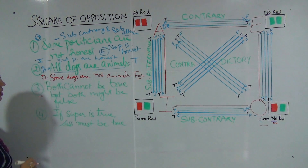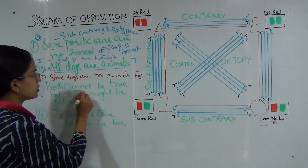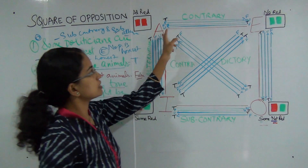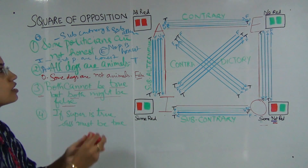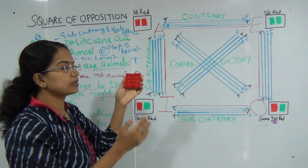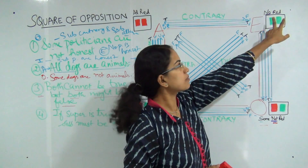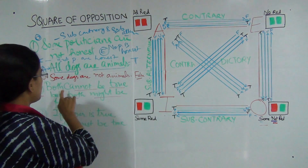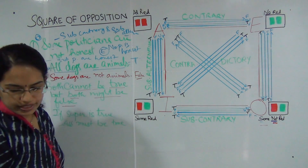The next question asks: in which categorical relationship can both not be true, but both might be false? Let's start with contrary — the relationship between A and E. If I say 'all blocks are red,' then 'none of them is red' is automatically false, because both blocks are red. So if one is true, the other automatically becomes false — both cannot be true at the same time. The first part of the statement is correct.